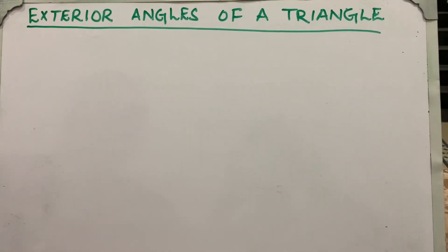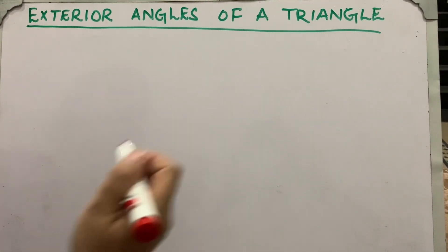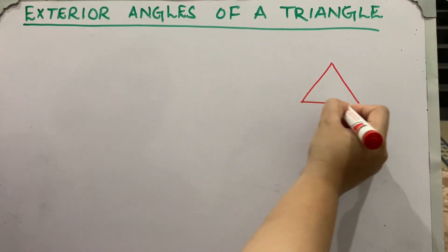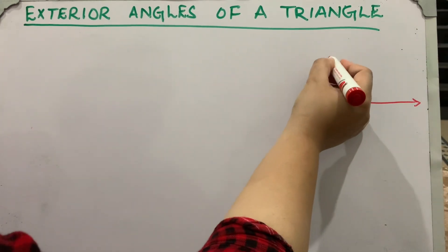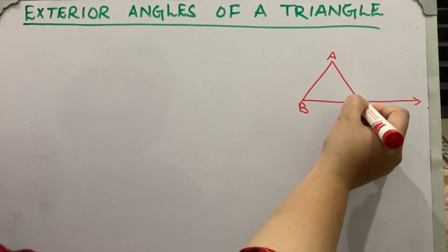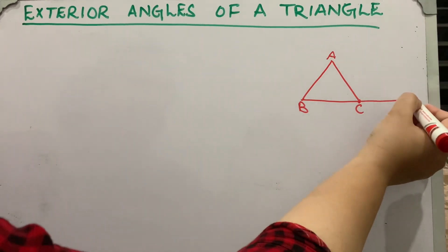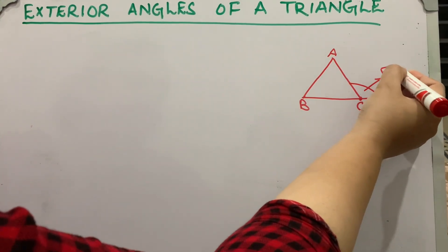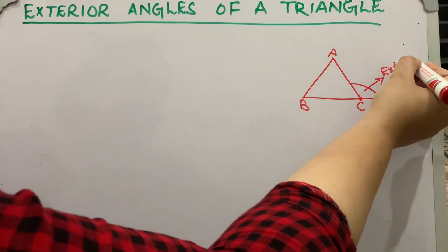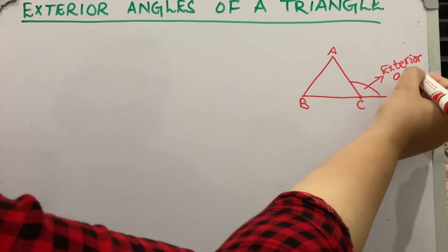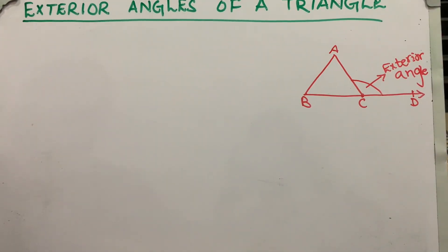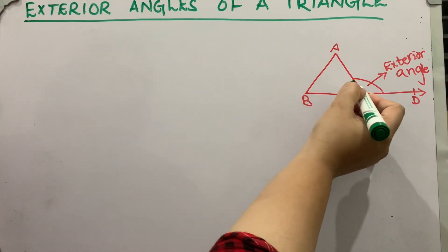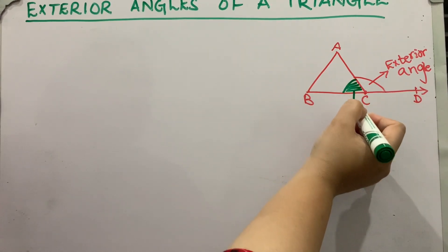Today's topic is exterior angles of a triangle. I'm going to draw a triangle here with vertices A, B, and C, and I have extended side BC towards D. This angle formed outside is an exterior angle, and this interior angle adjacent to it is called the adjacent interior angle.